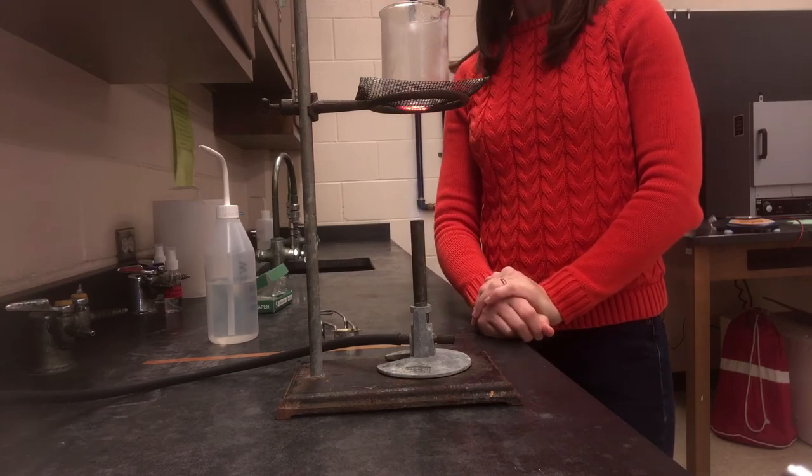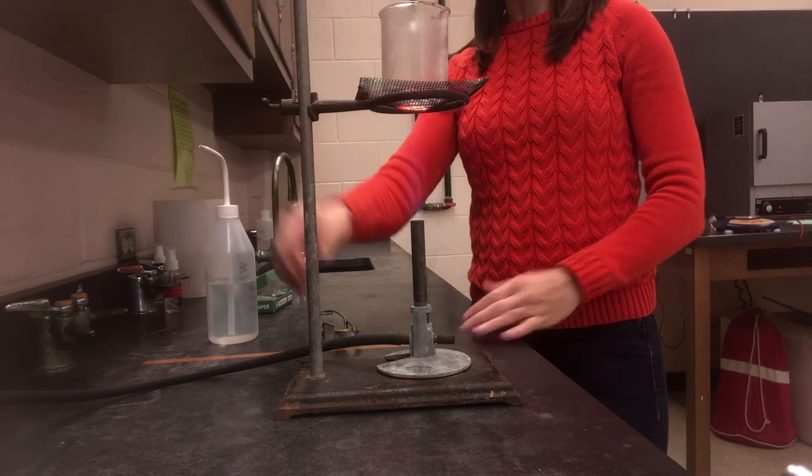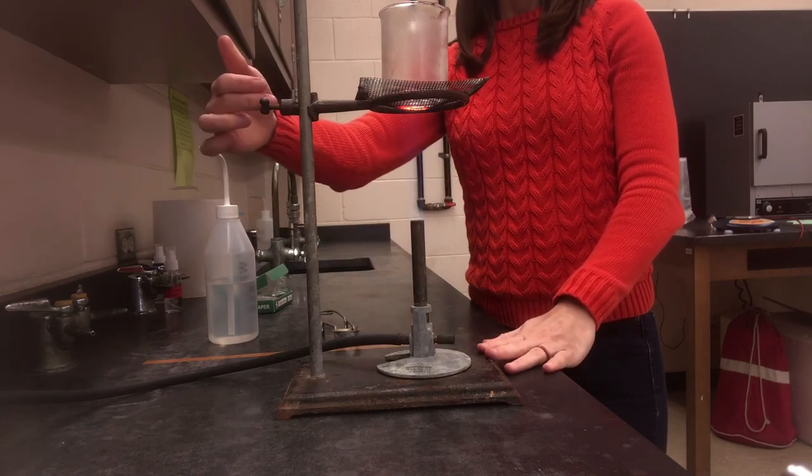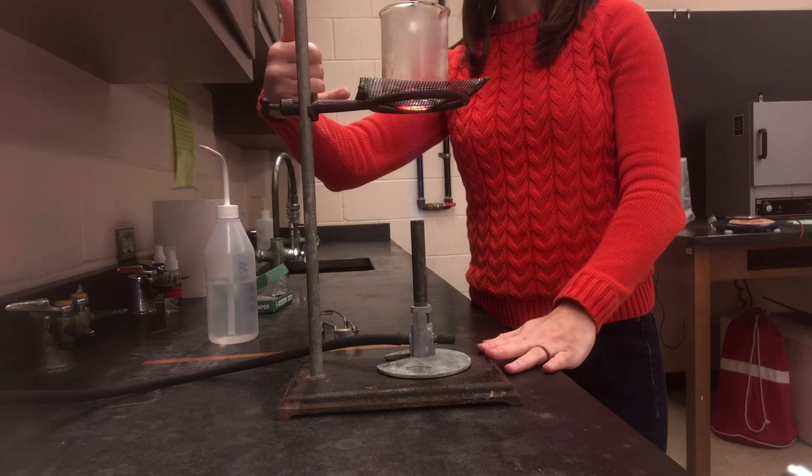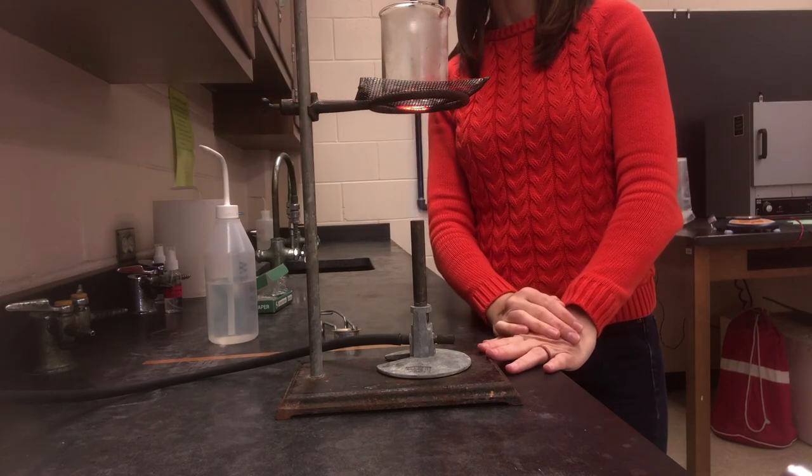So the idea is you've got a ring stand that your Bunsen burner sits on top, an iron ring, and then a piece of wire mesh or wire screening to support whatever object it is that you're going to be heating.